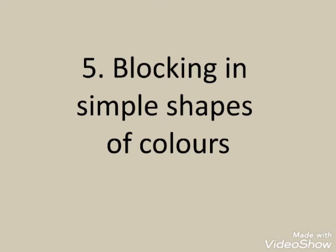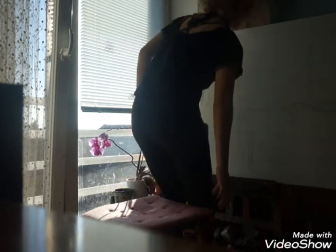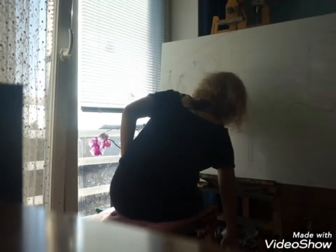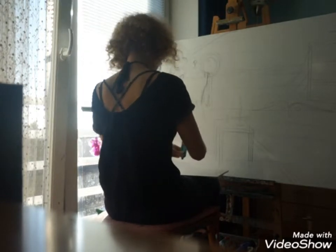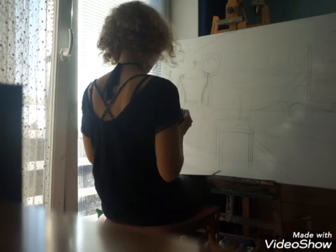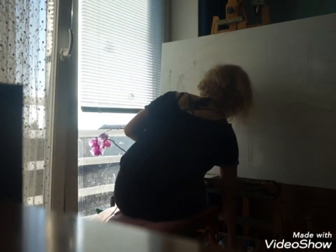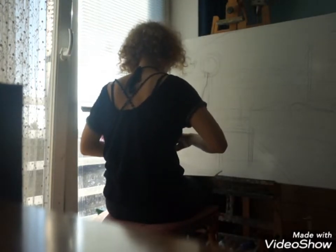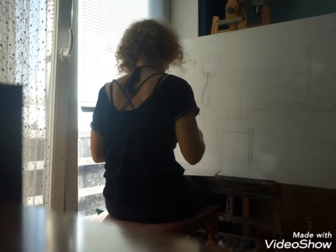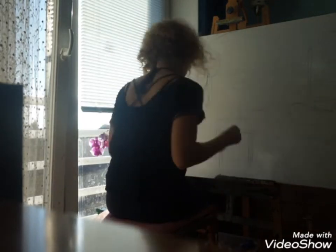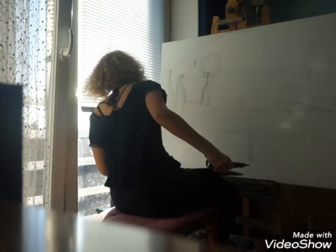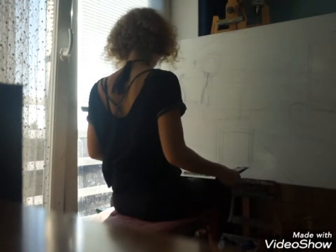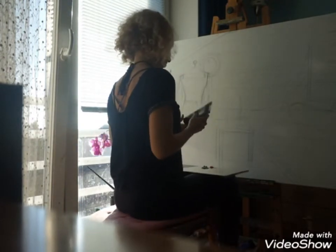Step five: blocking in simple shapes of color. Now that I have my reference photos, I take an acrylic color and block in very simple, approximate shapes of color. I do this because I sometimes want to change things around. My advice is to always start really vaguely and then look and see if you want to change something, because if you've already done many details and then want to paint over it, it's a waste of work. So I always block in first.